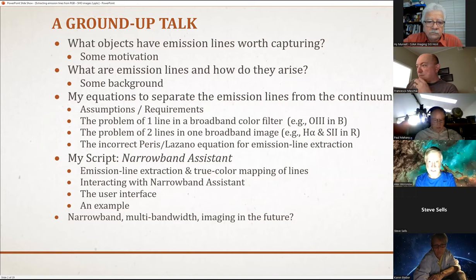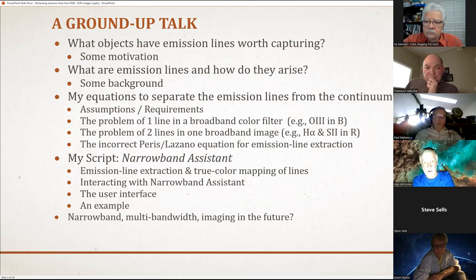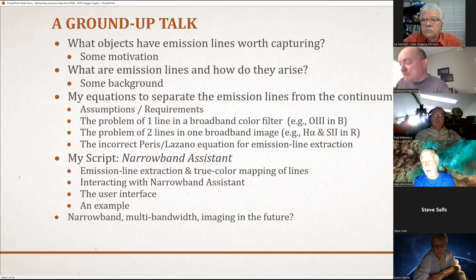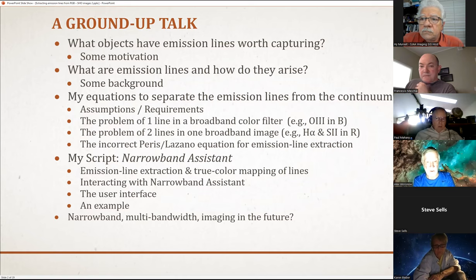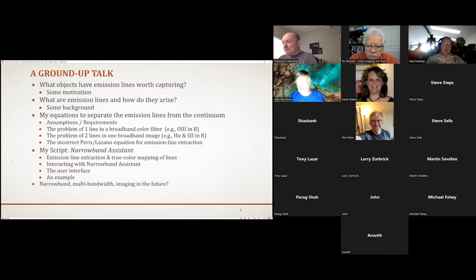I wrote a PixInsight script that performs my narrowband extractions and also assembles color images using true color mapping or something close to it. I'm a big advocate of not using the Hubble palette, which I find annoying and shocking to the eye — but that's a personal thing. I'll show the script, work a live example, and suggest something interesting we might do in the future to extract emission lines even better.